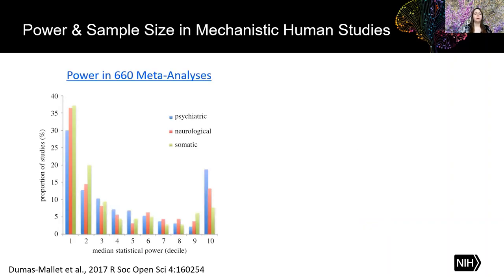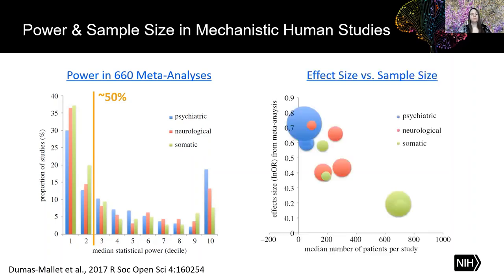A typical study aims to have about 80% power to detect the difference between groups, but often the actual power is much lower. This figure on the left shows data from 660 meta-analyses in three different disease areas. The authors used the effect size found in each meta-analysis to estimate the power in each original study. About 50% of the original studies had less than 20% power to detect a real difference between groups. Studies with low sample size can have inflated effect sizes, and being underpowered can lead to bias in the results.